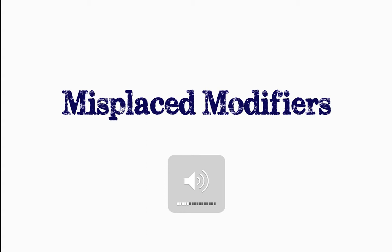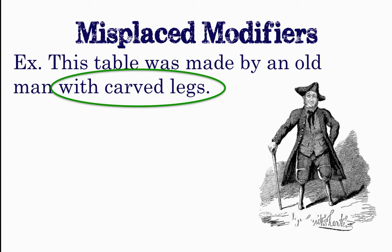This short video is going to be about misplaced modifiers. A misplaced modifier is a phrase or clause that finds itself in an unintended spot, and it ends up seeming to refer to the wrong part of the sentence. So, let's take a look at our first example.